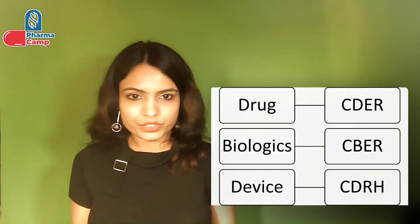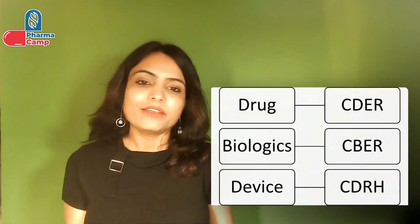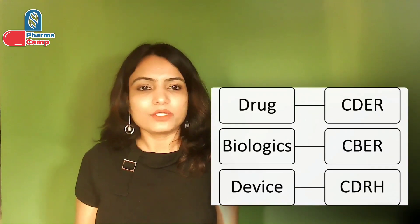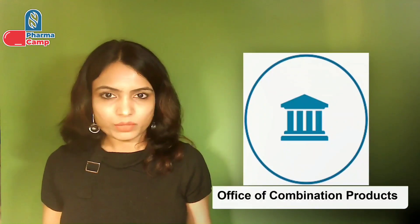Do you remember from the last video which center will be the lead reviewer for our application in the US for combination products? Which center will be the lead reviewer depends on the primary mode of action of our product. If the primary mode of action is a drug, the lead center will be CDER. If it is biologics, then CBER will be the lead center. And if the primary mode of action is due to a device, then the lead center will be CDRH. There is also a dedicated office in the US called the Office of Combination Products, or OCP, which keeps oversight on these three centers for combination products.